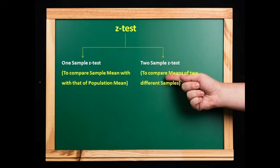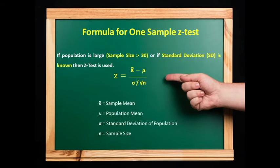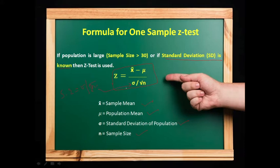Z-test is of two types. First is the one-sample test, used to compare sample mean with the population mean. Second is the two-sample test, used to compare means of two different samples. Formula for one-sample Z-test: if sample size is greater than 30 or if standard deviation is known, then Z = (x̄ − μ) / (σ / √n), where x̄ is sample mean, μ is population mean, σ is population standard deviation, and n is sample size. The standard error of mean equals σ / √n.